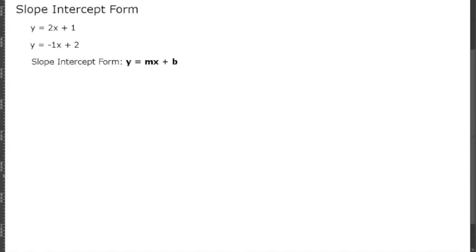Slope-intercept form is y equals mx plus b. m is the slope, b is the y-intercept, and x and y are variables. In later videos I will go over what exactly the slope is and what exactly the y-intercept is, but for now we're just going to practice getting all linear equations into this form.